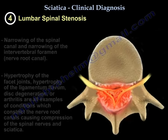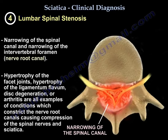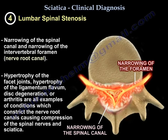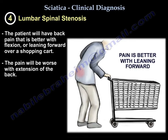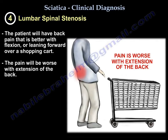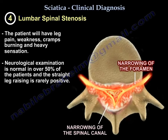Number four is spinal stenosis — narrowing of the spinal canal and narrowing of the foramen from enlarged, hypertrophied facet joints, hypertrophy of the ligamentum flavum, disc degeneration, and spinal arthritis. All of that causes pressure on the nerve roots and sciatica. The patient will have back pain that is better with flexion or leaning forward over a shopping cart, and worse with extension. There will be leg pain, weakness, cramps, burning, and heavy sensation. The neurological exam is normal in over 50% of patients, and the straight leg raise is rarely positive.